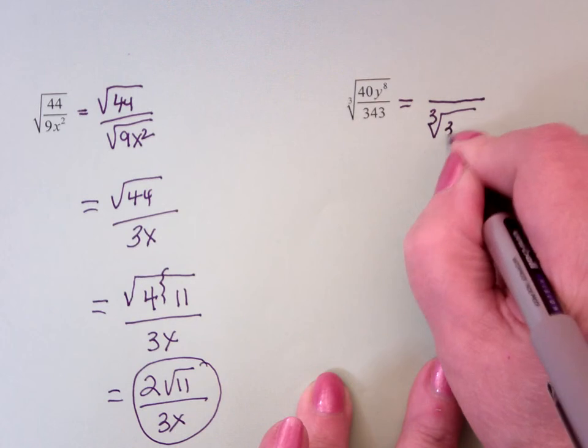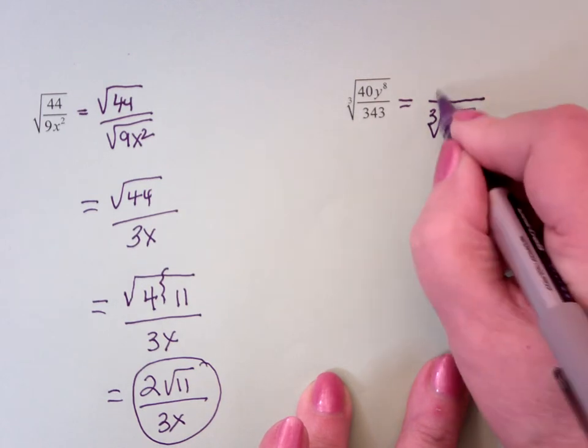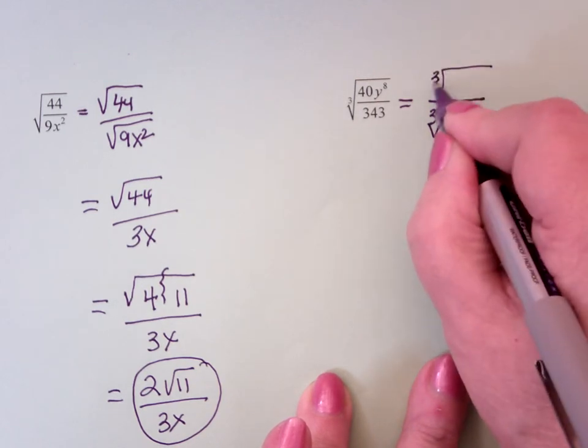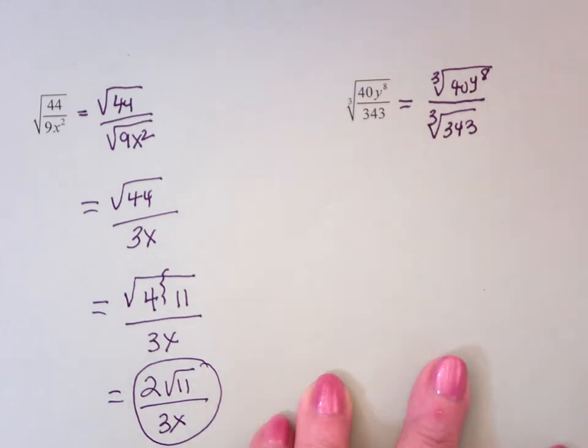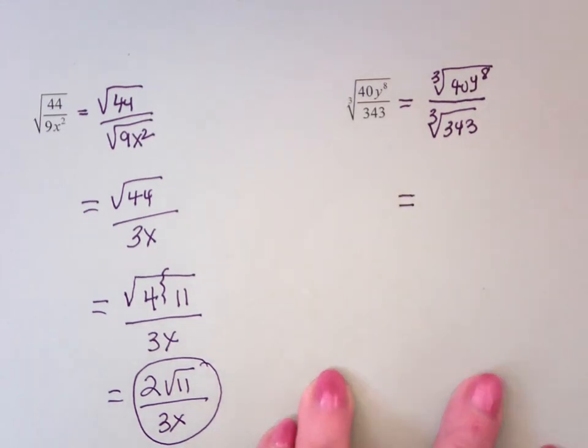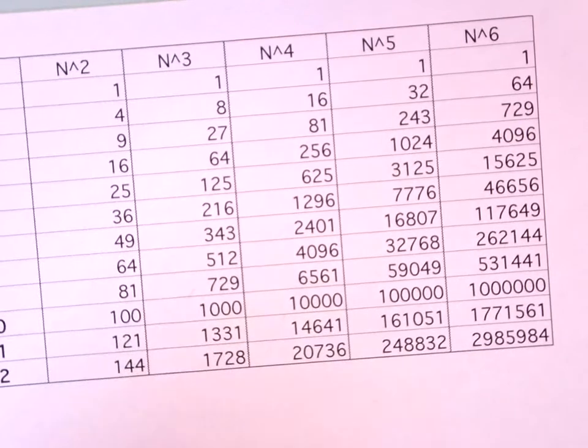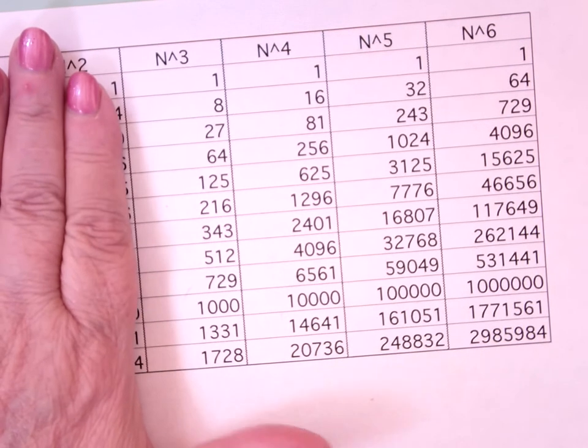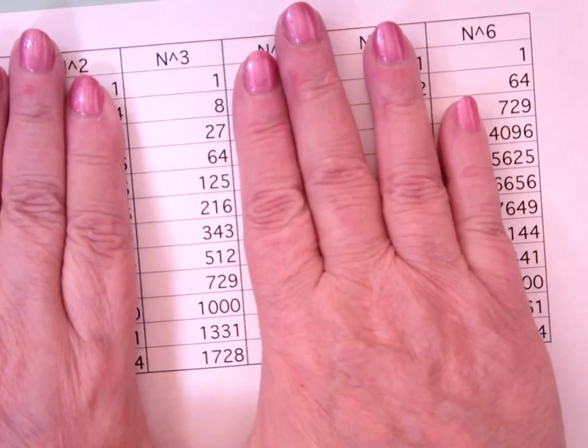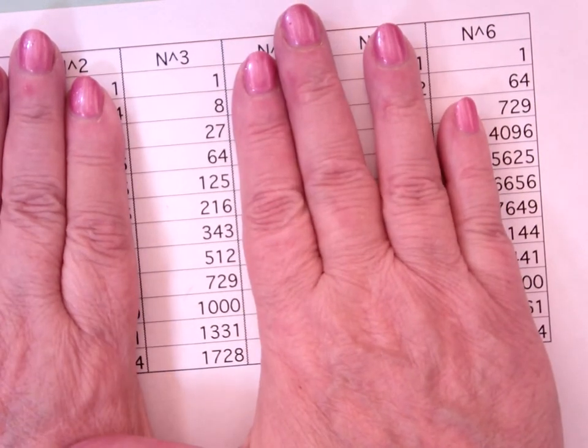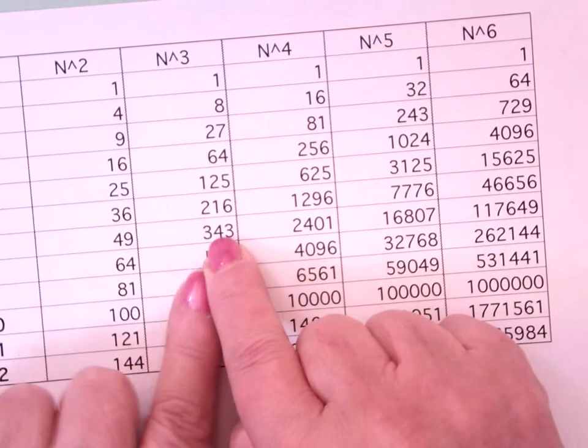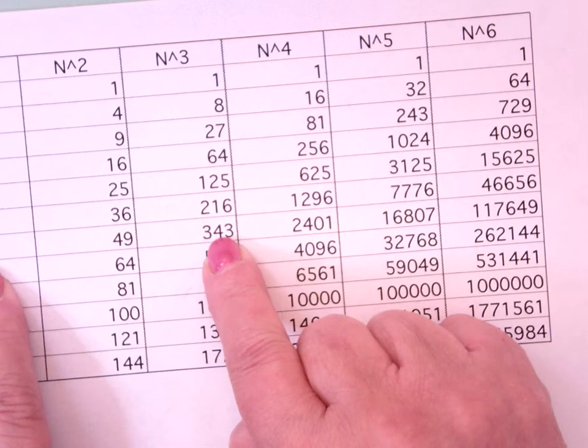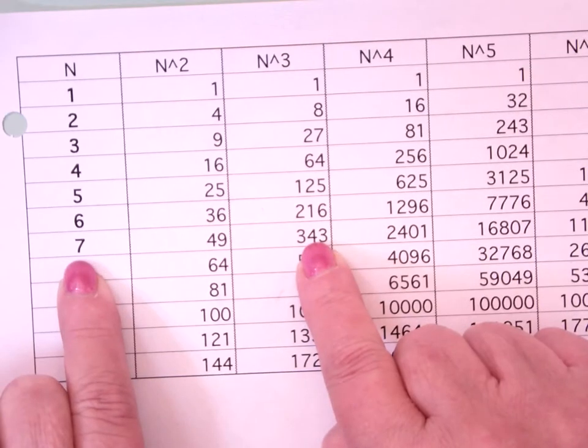Cube root of 343. Cube root of 40y to the 8. Well, if I look at my powers table and I'm dealing with cube roots, so I'm going to cover this up. It's just the cubes. Is 343 in my list? Yeah, that's this guy. And I come across, and it is 7.